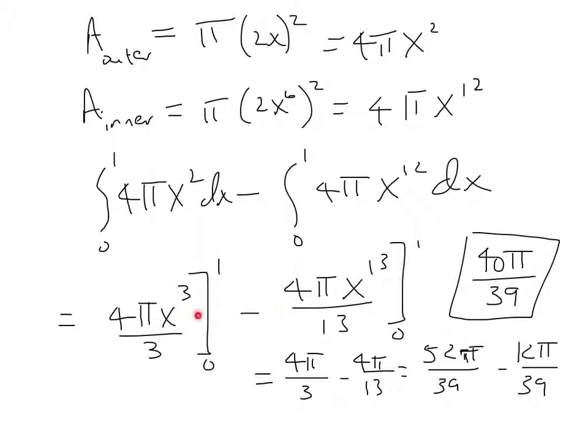This would result in 4 pi x cubed over 3 from zero to one, minus 4 pi x to the thirteenth over 13 from zero to one.